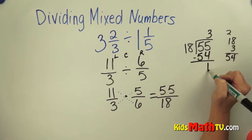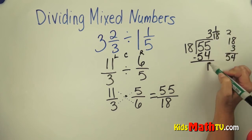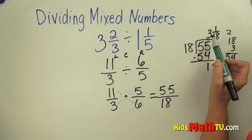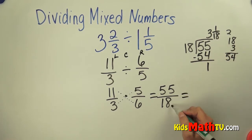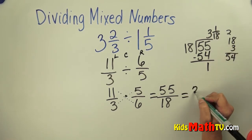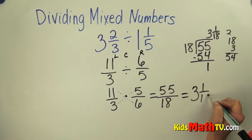Subtract. And I have 1 eighteenth left over. My remainder becomes the numerator. The denominator is the divisor. So 55 eighteenths gets renamed as 3 and 1 eighteenth.